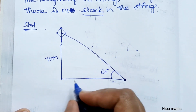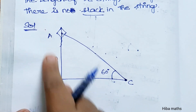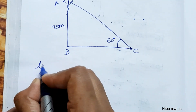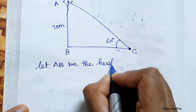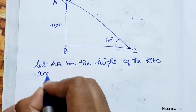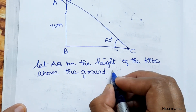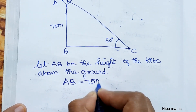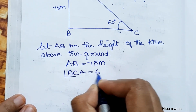Let's label the triangle as A, B, C. The height above the ground, AB, is 75 meters, and the angle of elevation, angle BCA, is 60 degrees.